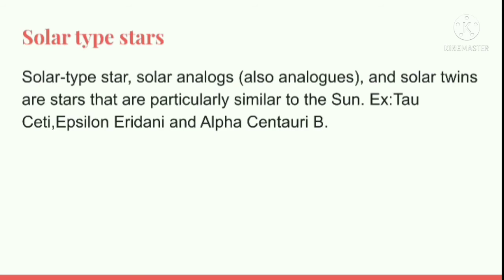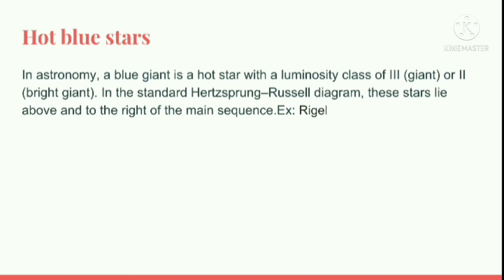Now we're going to talk about solar type stars. Solar type stars, solar analogues, and solar twins are stars that are particularly similar to the Sun. Examples: Tau Ceti, Ceylon, Eridani, and Alpha Centauri B.